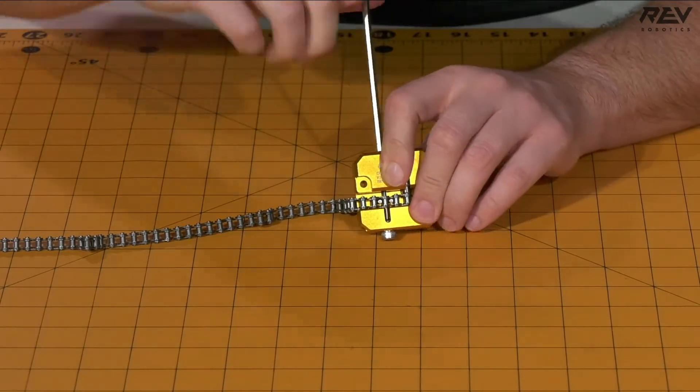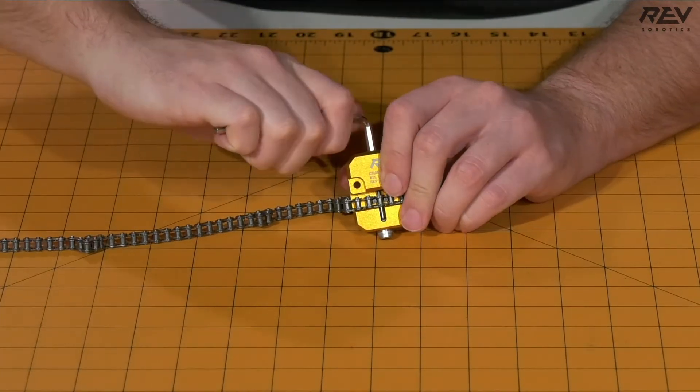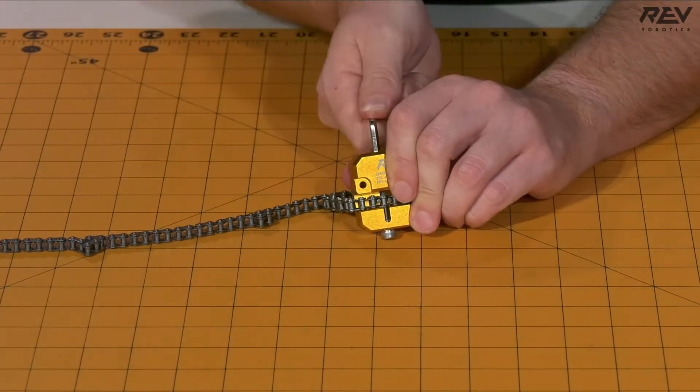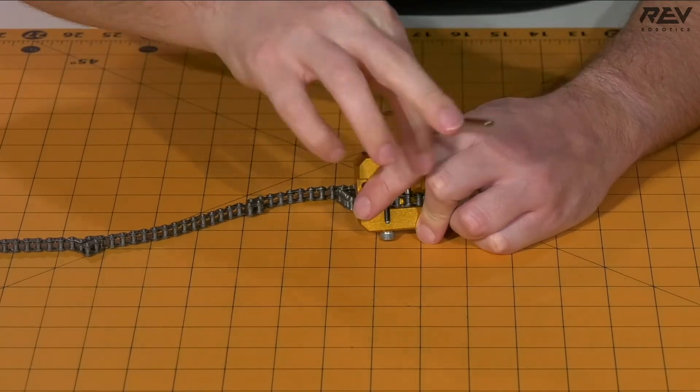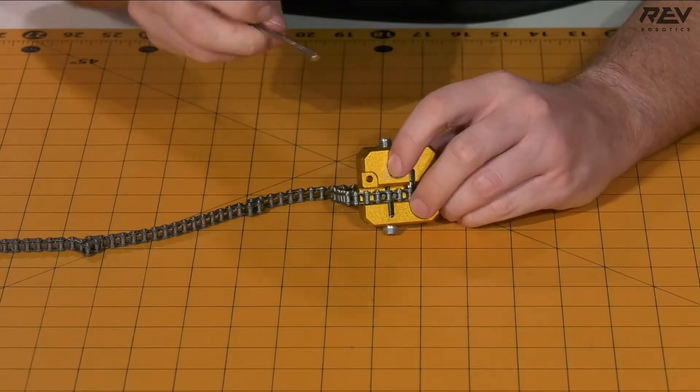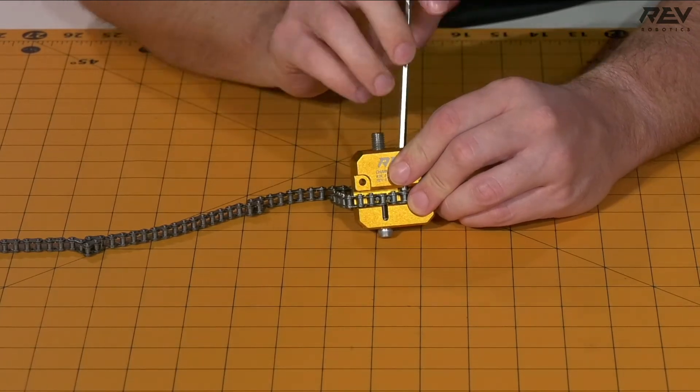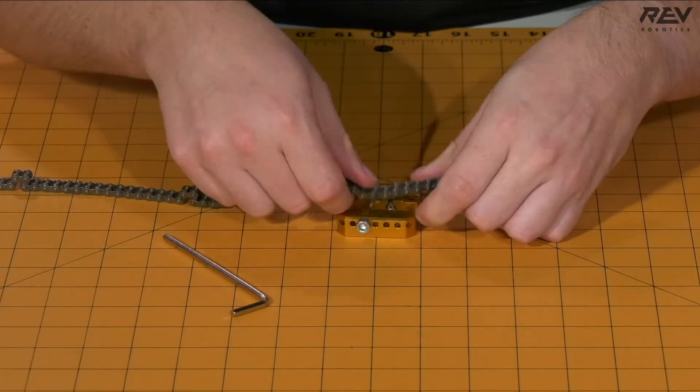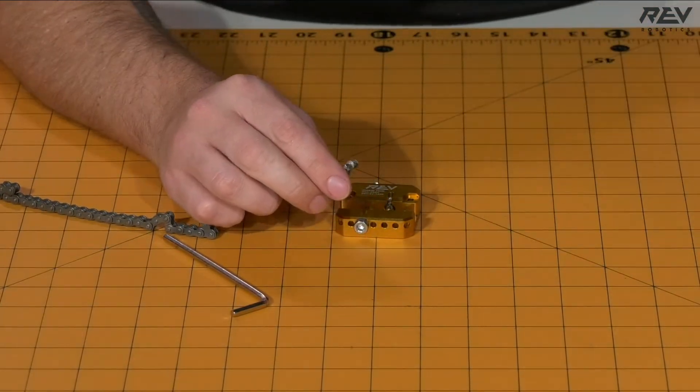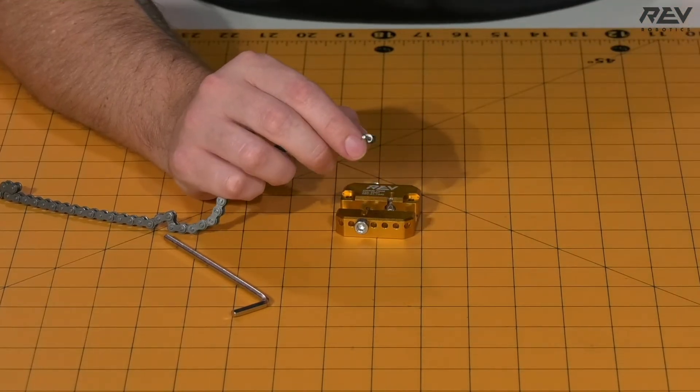This may take a few times for you to be able to get it just right where you do not need to use a master link. Once the chain ends up breaking away, you're going to want to remove that chain and push that to the side.